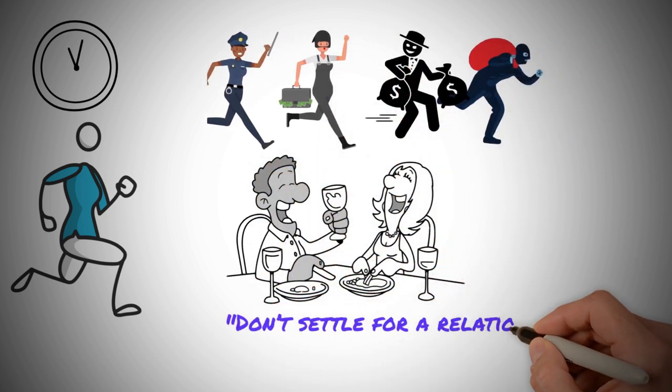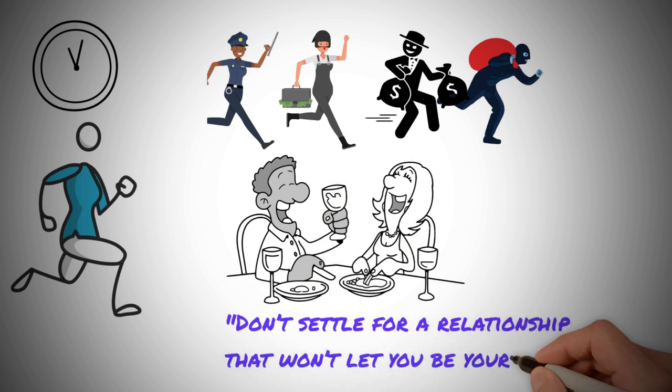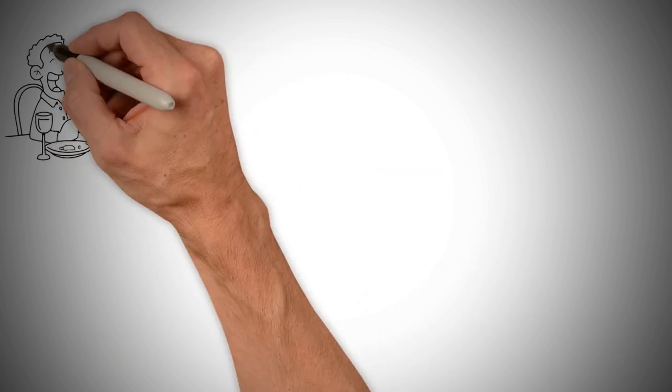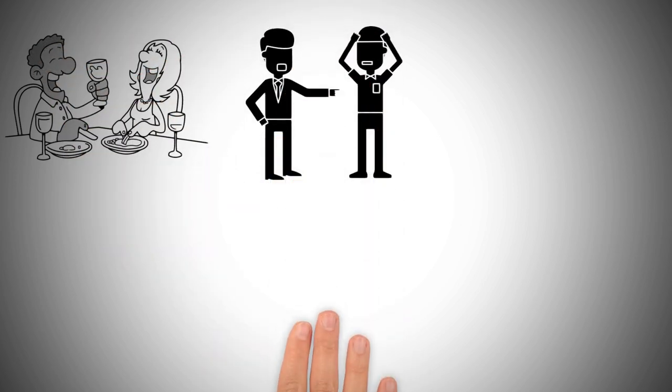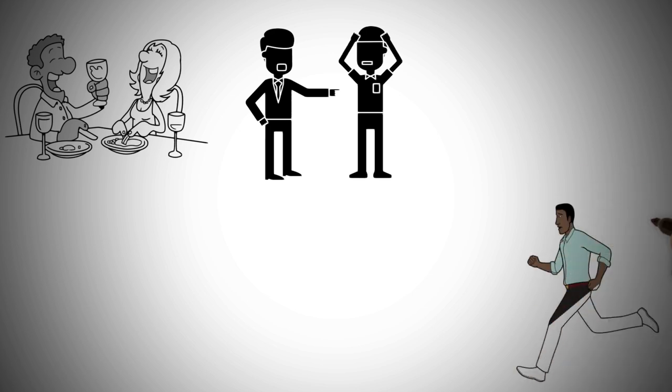Oprah Winfrey said, don't settle for a relationship that won't let you be yourself. If you have friends who will not allow you to be the best version of yourself but are always pointing out your mistakes and errors, run away from them. They'll not allow you to be yourself.